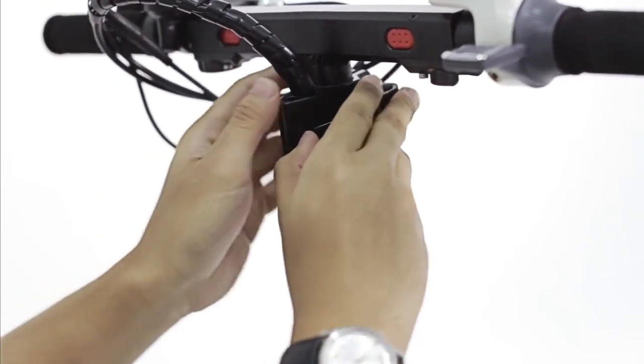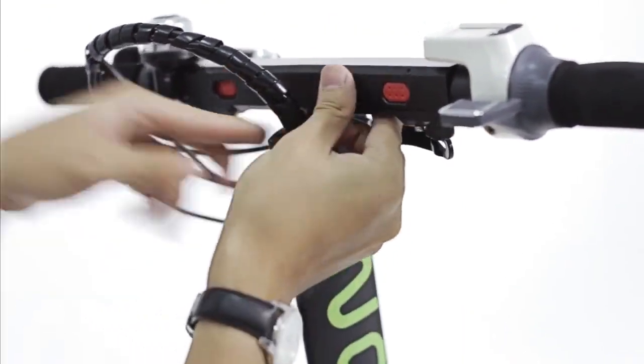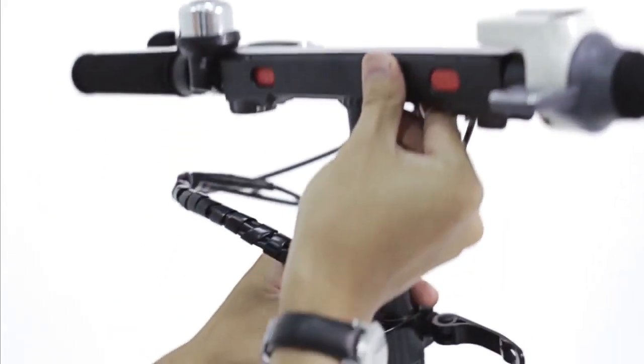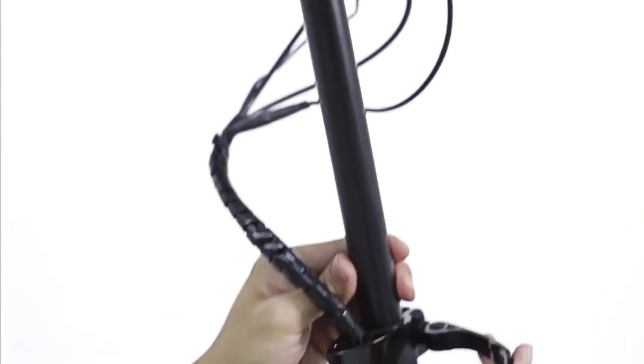On the stem, pull the quick release and bring the handlebar all the way up. Re-tighten the quick release.